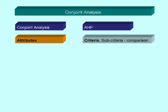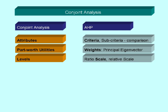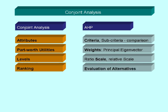Now let us compare the conjoint analysis with the analytic hierarchy process, AHP. The attributes in conjoint analysis correspond to the criteria or sub-criteria which are compared in AHP. Instead of calculating part-worth utilities, in AHP we calculate the principal eigenvector to find the relative weights. In conjoint analysis we code attribute values as levels. In AHP we use a ratio scale. The ranking corresponds to the evaluation of alternatives.